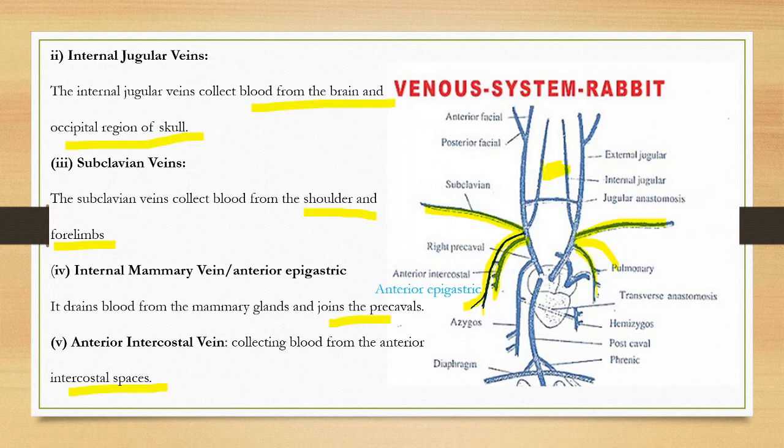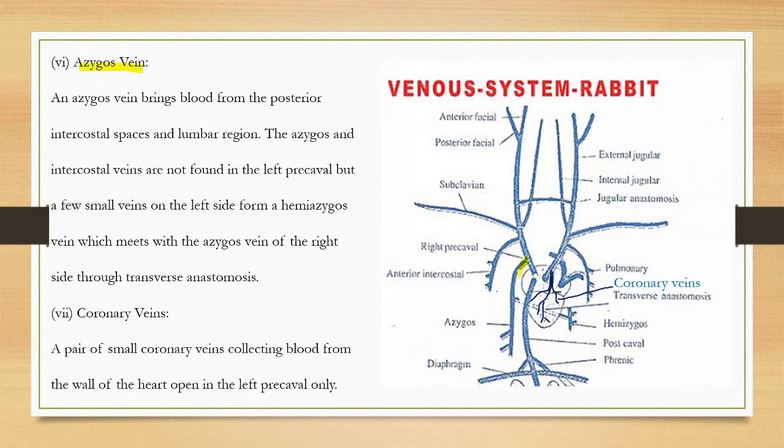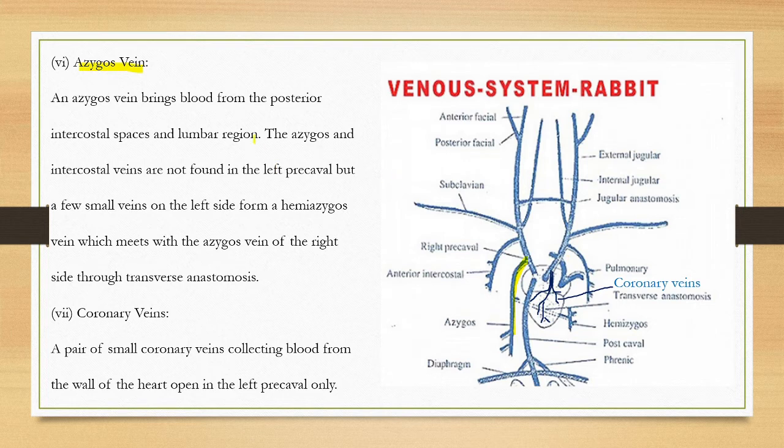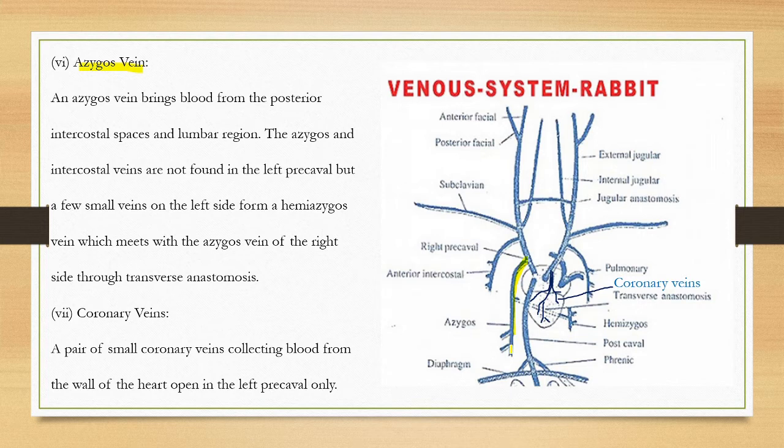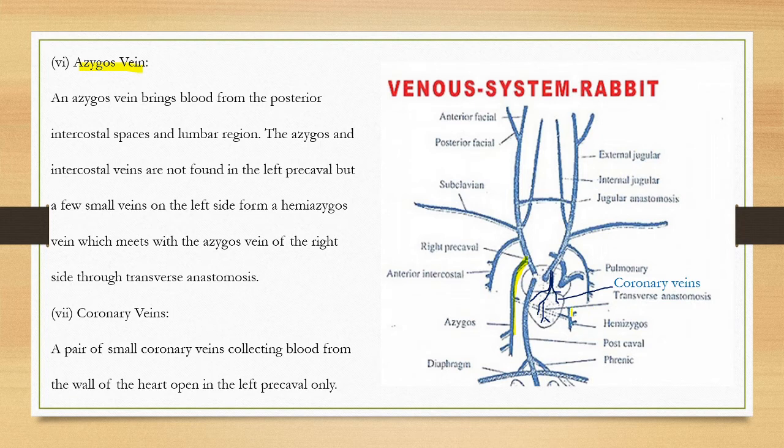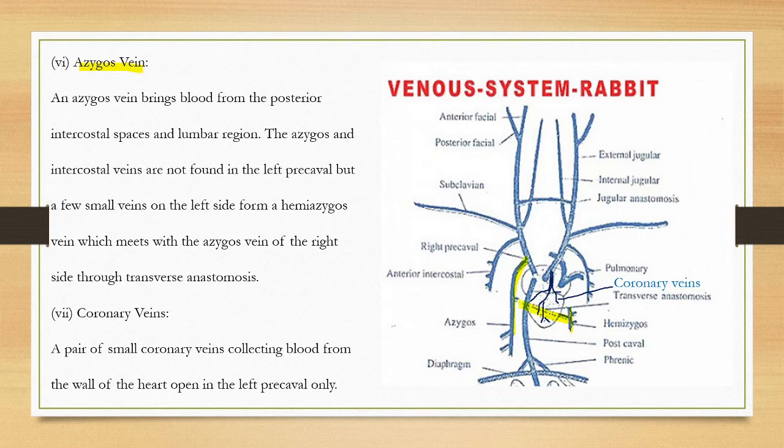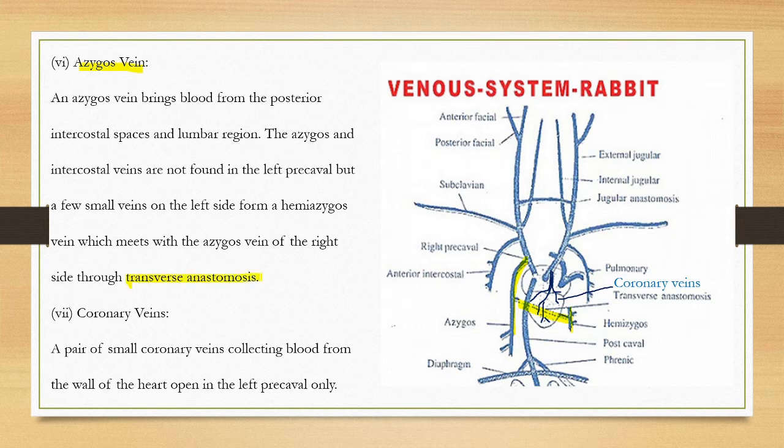On the opposite side is the azygos vein. The corresponding left side also has branches. The azygos vein brings blood from the posterior intercostal spaces, lumbar region. The azygos and intercostal veins are not found in the left precaval. A few small veins on the left side form the hemiazygos vein, which transfers and connects.